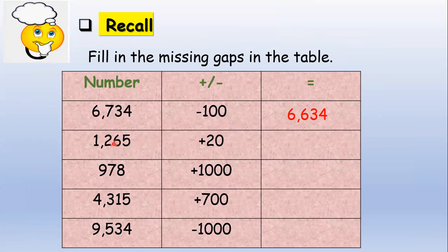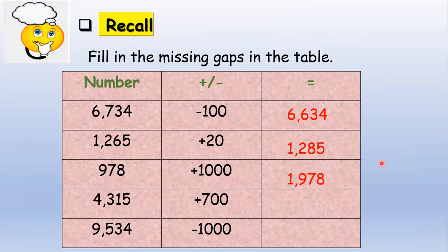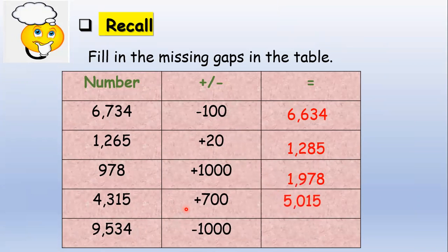The second one: 1,265 plus 20 equals 1,285. Good job. The next one: 978 plus 1,000 equals 1,978. And the fourth one: 4,315 plus 700 equals 5,015. And the last one: 9,534 minus 1,000 equals 8,534.